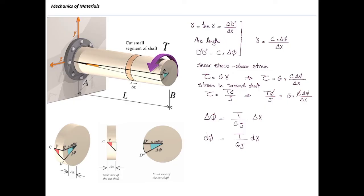If the deformation is very small, delta phi and delta x can be written as a differential equation. So d phi equals T divided by GJ, multiplied by dx. This shows the amount of twist in one tiny slice of the element. If we have an infinite number of those tiny pieces put together, phi is simply the integral of d phi from 0 to L, and on the right side, the integral of T divided by GJ dx.